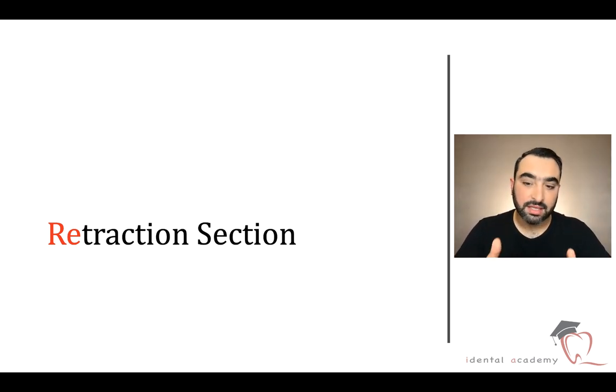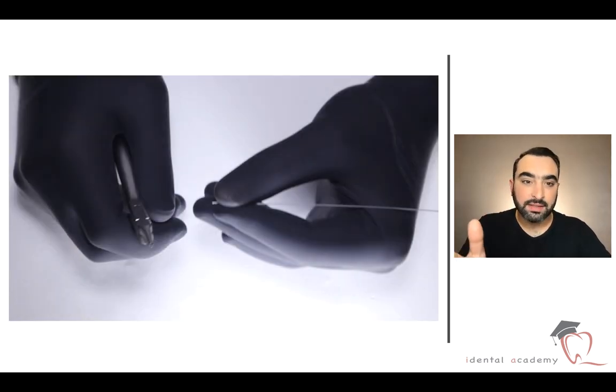So we can't put straight wire from the first stage even if we are going to use mini screw. In this case we can use retraction section that we can insert in the molar band or buccal tube or you can use it with mini screw. Let's see together how to make this retraction section - it's easy.